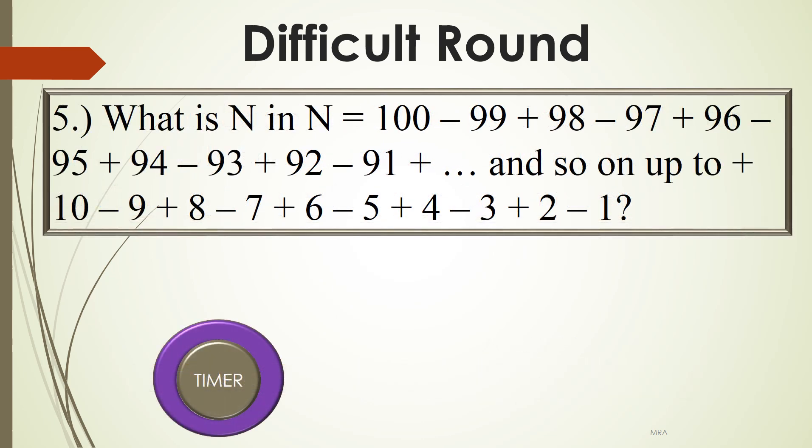Question 5: What is N, where N equals 100 minus 99 plus 98 minus 97 plus 96 minus 95 plus 94 minus 93 plus 92 minus 91 and so on, up to plus 10 minus 9 plus 8 minus 7 plus 6 minus 5 plus 4 minus 3 plus 2 minus 1? Go.